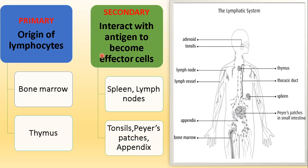The lymphoid organs are primary and secondary. Primary lymphoid organs are mainly the ones involved with the origin of lymphocytes — there are two: bone marrow and thymus, as we can see in this figure. These two are mainly involved with the formation and maturation of lymphocytes. Thymus is involved with maturation, whereas bone marrow is involved with formation as well as maturation. We should always remember that bone marrow is the site where all blood cells are formed.